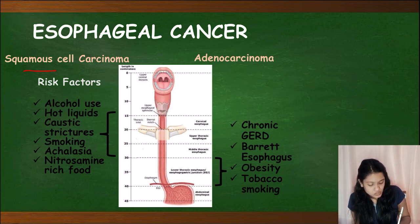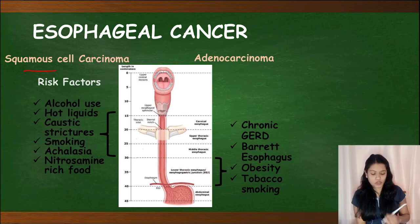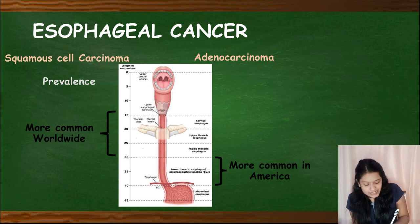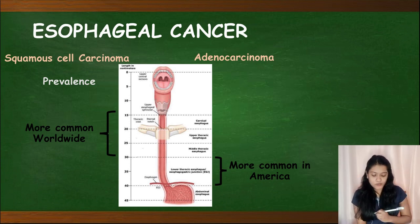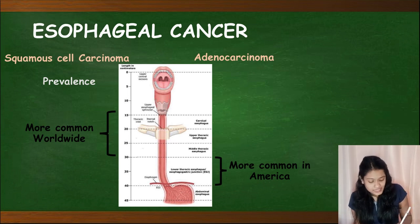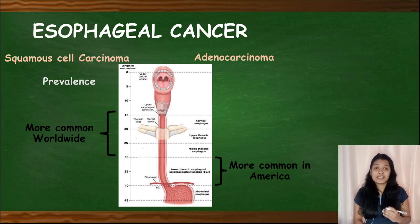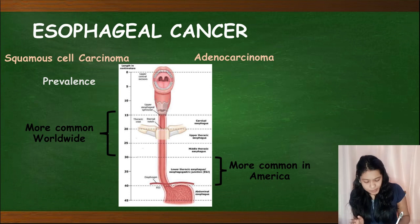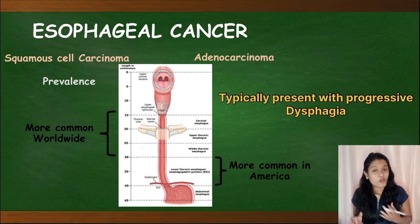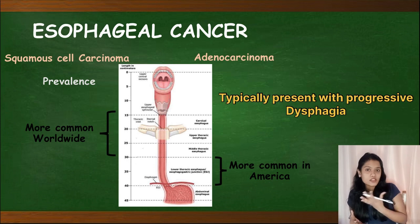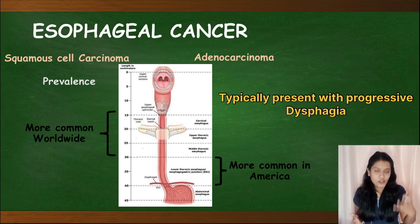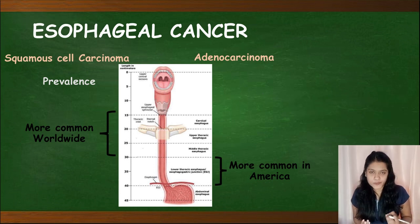For prevalence, squamous cell carcinoma is more common worldwide, whereas adenocarcinoma is more common in America. Esophageal cancer typically presents with progressive dysphagia — first for solids and then for liquids — and it has a poor prognosis.